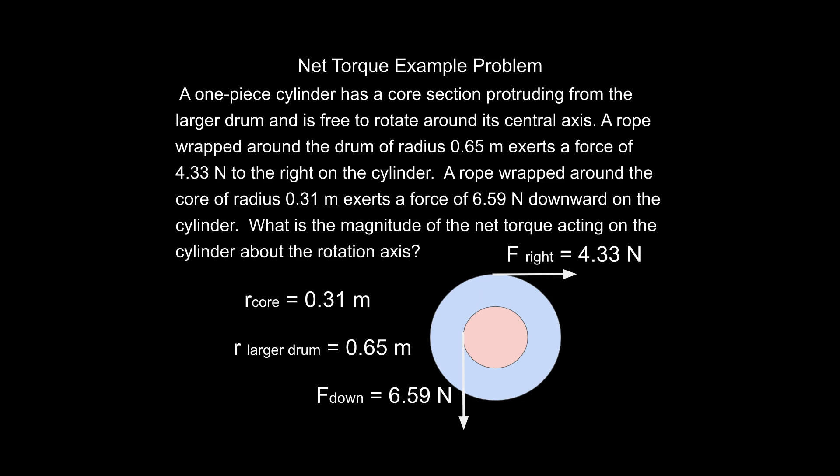The two cylinders are connected and some of the details are up there. I have included some of the details in the diagram here. We do have the radius of the core in meters, radius of the larger drum, the force that's involved here, and the force that's involved here. That's essentially all we need to be able to solve this problem.